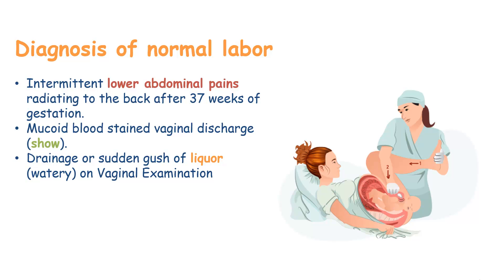How do we make a diagnosis of normal labour? A diagnosis of normal labour is made when there is intermittent low abdominal pains radiating to the back after 37 weeks of gestation. There will be a mucoid bloodstained vaginal discharge that is known as show, or a drainage or sudden gush of liquor that is watery, on vaginal examination.